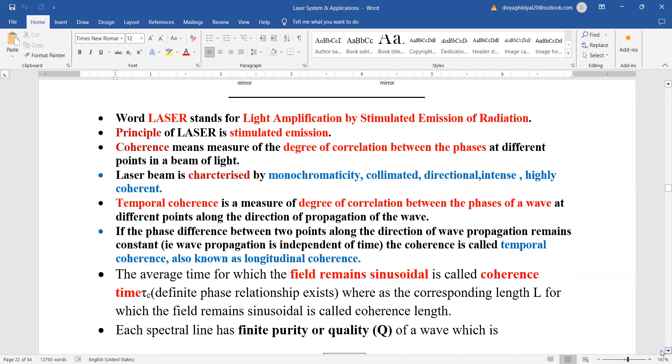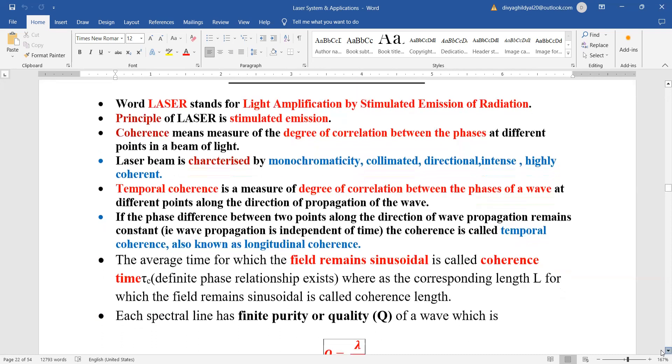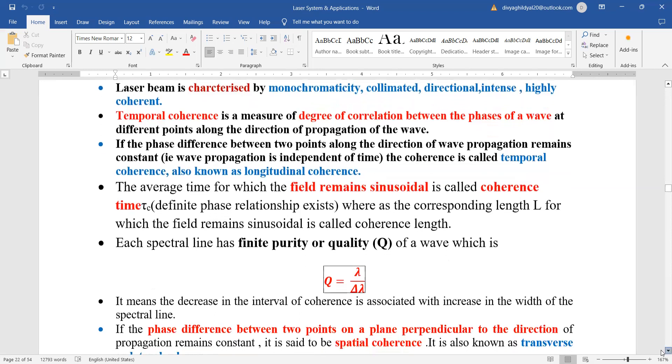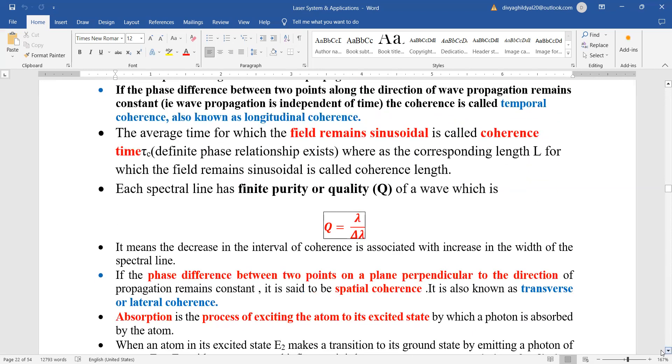Temporal coherence is also known as longitudinal coherence and it is the degree of correlation between the phases of a wave. The average time for which the field remains sinusoidal is called coherence time, and the corresponding length for this coherence time is known as coherence length.